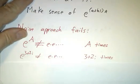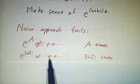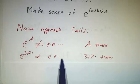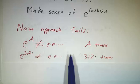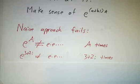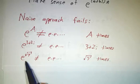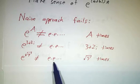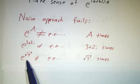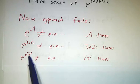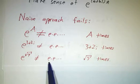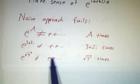And if I write e to the 3 plus 2i, that's not e times e times e, 3 plus 2i times. You can't multiply things together 2i times. But if you think about it, you can't multiply things by each other square root of 7 times either. And we've been dealing with functions like e to the x, where you take e to an arbitrary real number power, including e to the root 7.